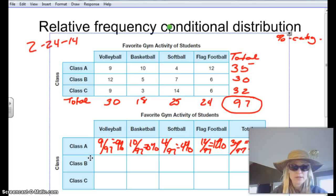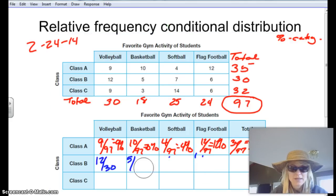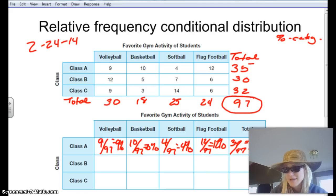So looking at the next one, we're going to go ahead and set up our ratios. Class B, I have 12 that like volleyball out of 30. So this is going to be 12 out of 30, and then we have 5 that like basketball out of 30, 7 that like softball out of 30, and then I have 6 that like flag football out of 30. Oh shoot, I did that wrong. Did you catch that? It's not out of 30. Maybe you'll learn from my mistake. It should be out of the total 97. Sorry.